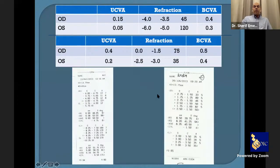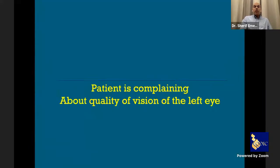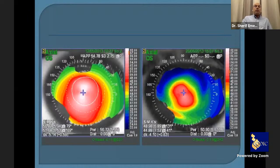Comparing pre-op and post-op autorefraction, we saw a decrease in both myopia and astigmatism in both eyes, especially the left. Uncorrected vision in the left eye improved from 0.05 to 0.2, and best corrected from 0.3 to 0.4. The corneal topography showed significant flattening and displacement of the apex toward center. However, the patient was still complaining about the quality of vision in the left eye.